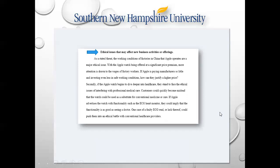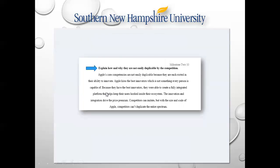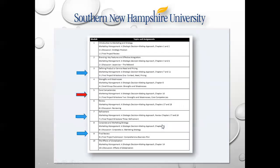Ethical issues — as a stated threat, the working conditions of factories in China. When we're talking about ethical issues, we're talking about ethical issues in the product. For instance, in India they use child labor and pay them 16 cents a day. In China, they pay them basically nothing, and the working conditions are terrible. You want to look into that — a couple of paragraphs and you'll be fine.